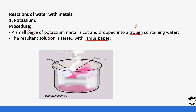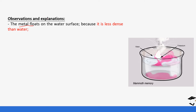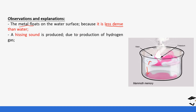This is the setup — you can see the large trough containing water and then the piece of potassium is dropped in. The reaction happens very quickly and immediately. Let's look at the observations seen in this reaction. First of all, the metal floats on the water surface. The reason why potassium floats on the water surface is that it is less dense than water — we also call it lighter than water. If it were heavier than water we would expect it to sink to the bottom.